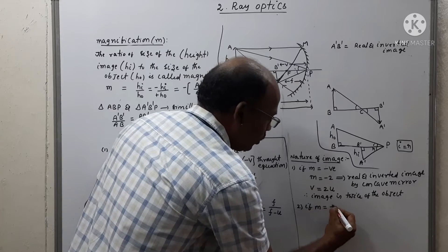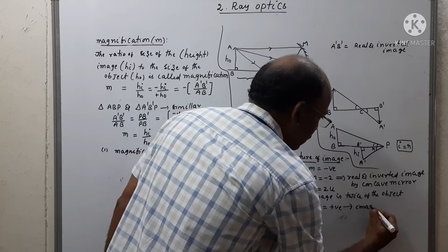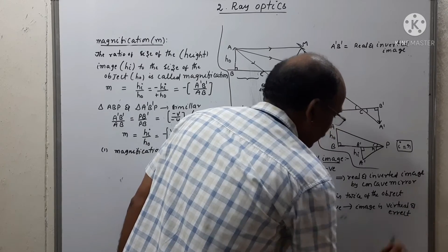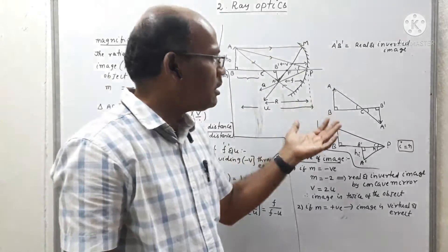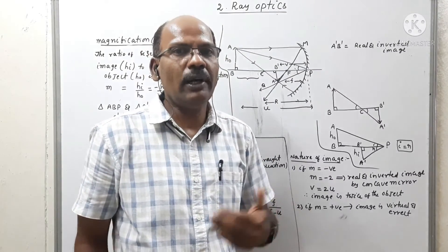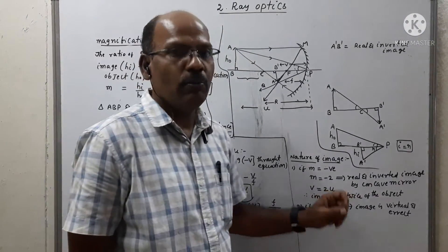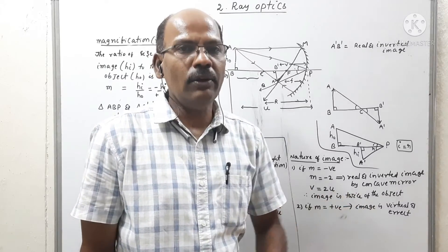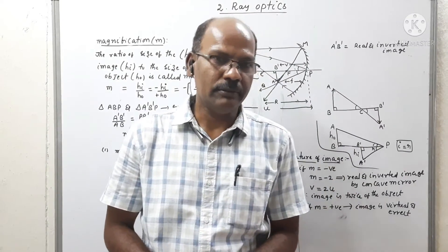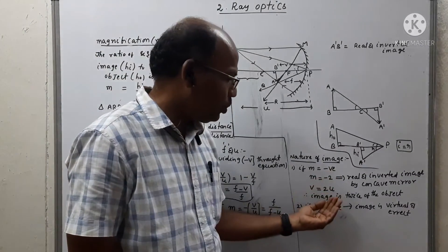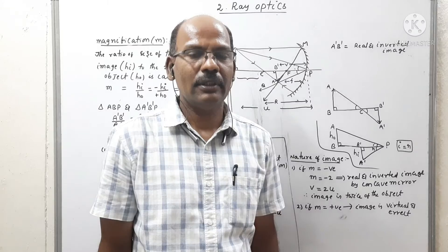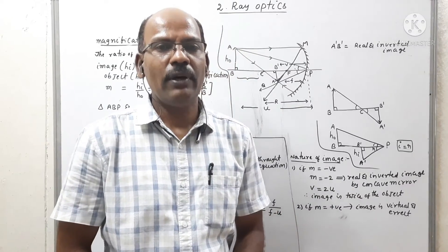If M is positive with value 3, the image is virtual, erect, and three times the size of the object. Based on the positive or negative value of magnification, we can clearly explain the nature of the image.